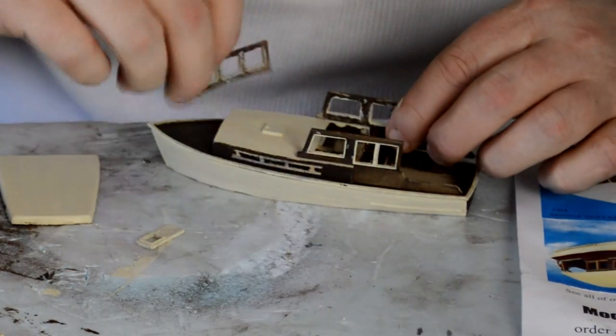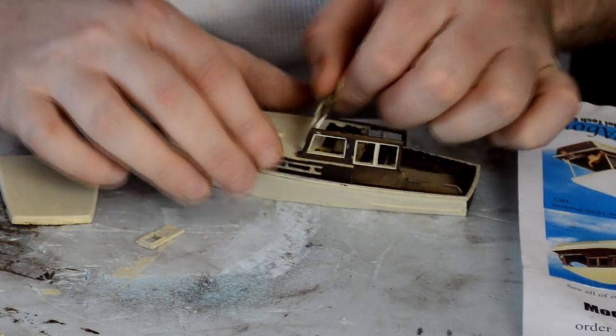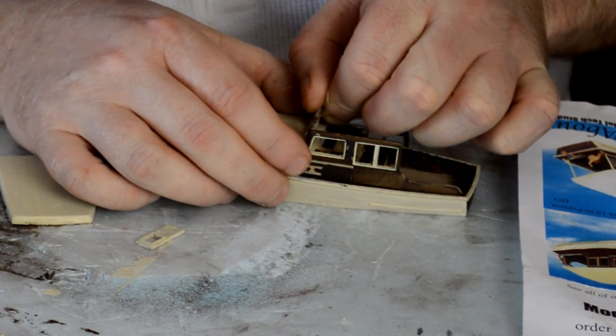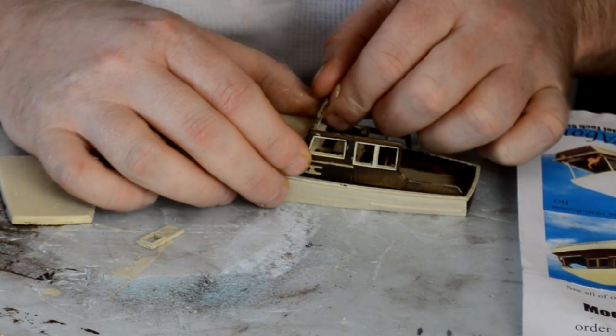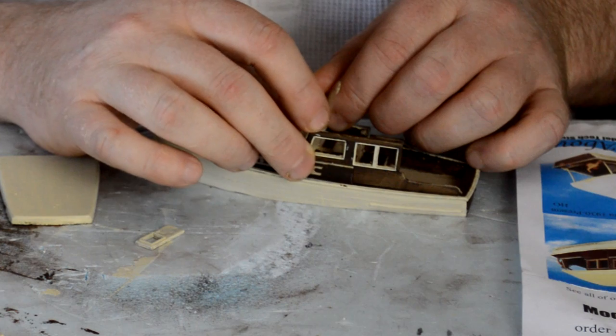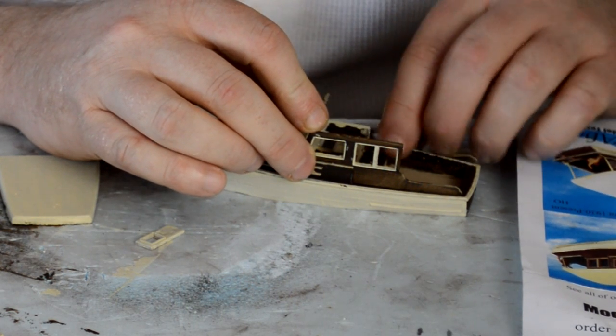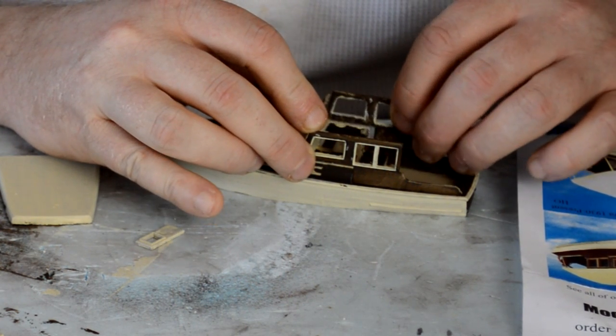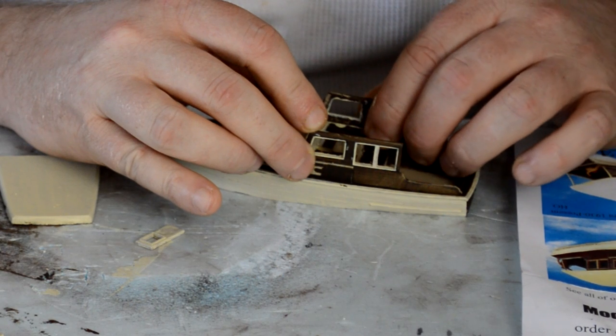While sizing up the front window, I dry fit everything and noticed that the front window was a little bit too wide to allow the other side panel to fit properly. So I just shaved off one side of the front window and it allowed the side panel to sit just right.